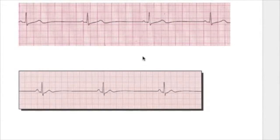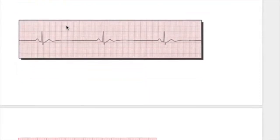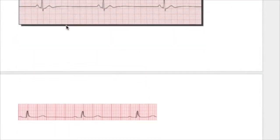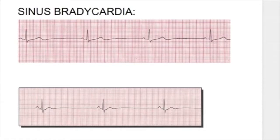Sinus bradycardia: heart rate is less than 60 and it fails to increase with exercise. The rate is slow but the ECG is normal except that the QRS complex is contracted — that is, less than 0.12 seconds — but the rhythm is regular. The regular rhythm with slow rate and a contracted QRS complex is characteristic of sinus bradycardia.